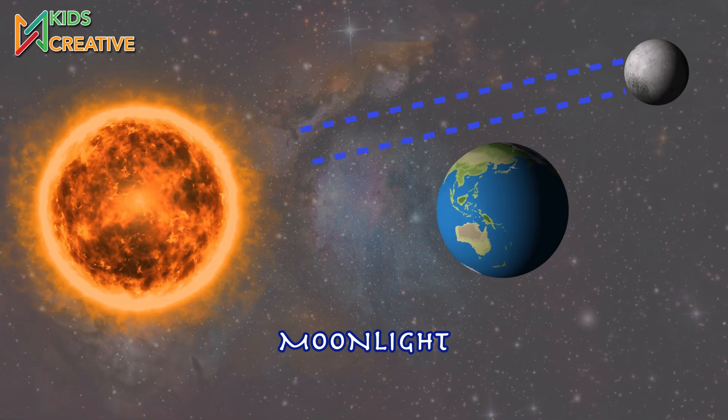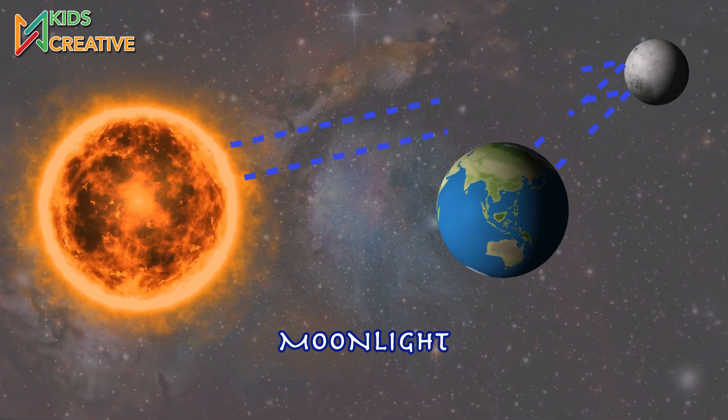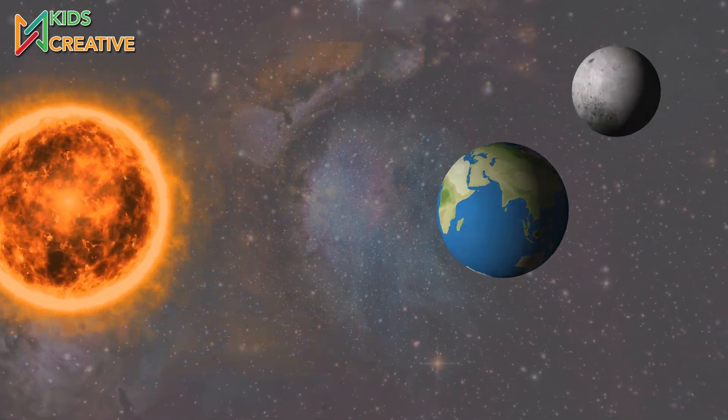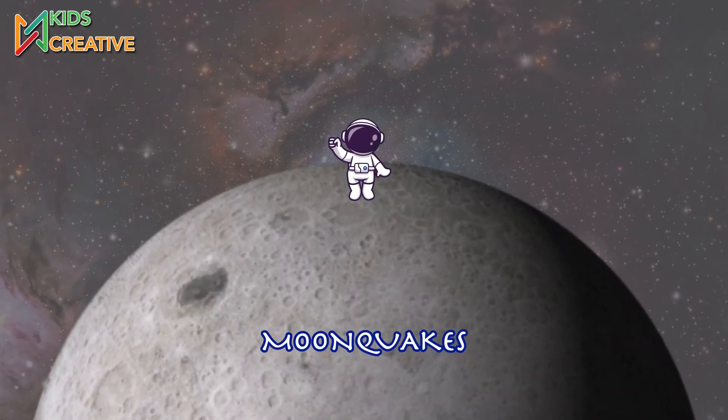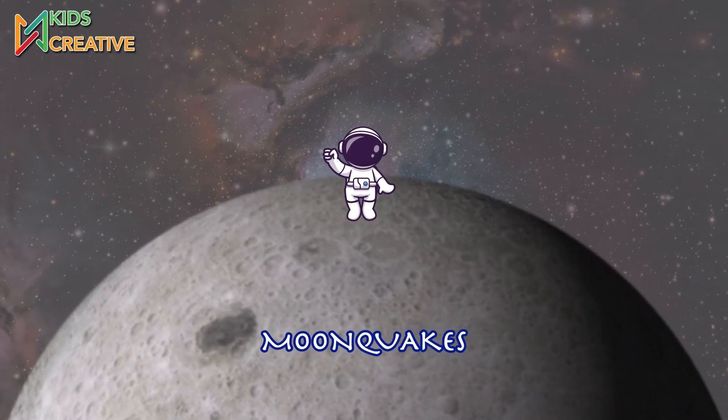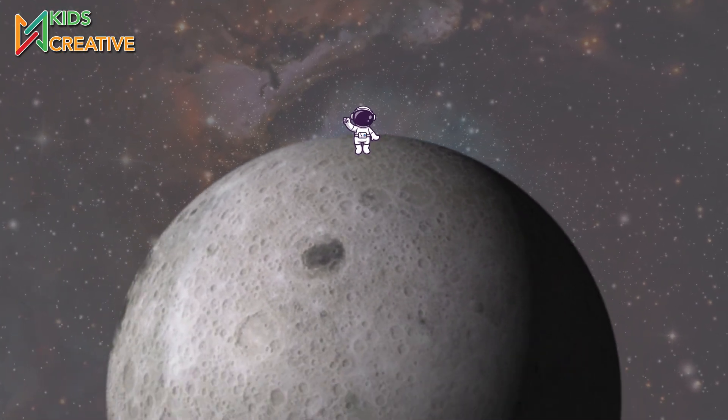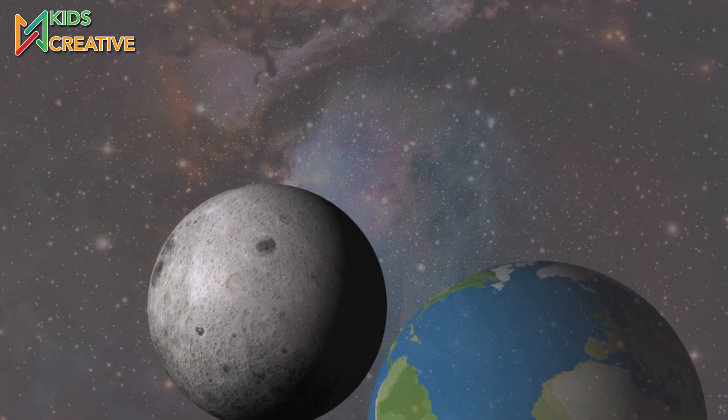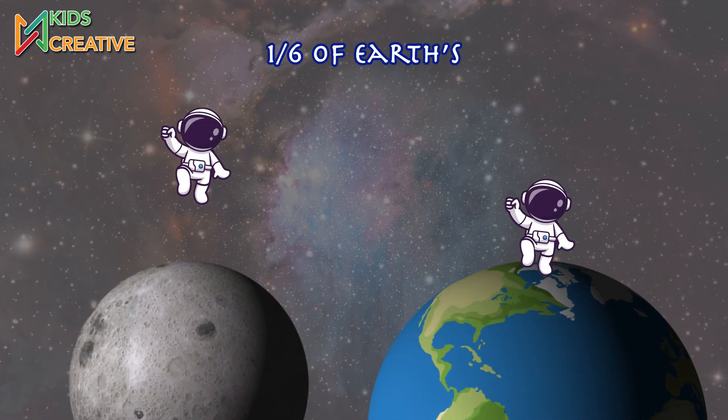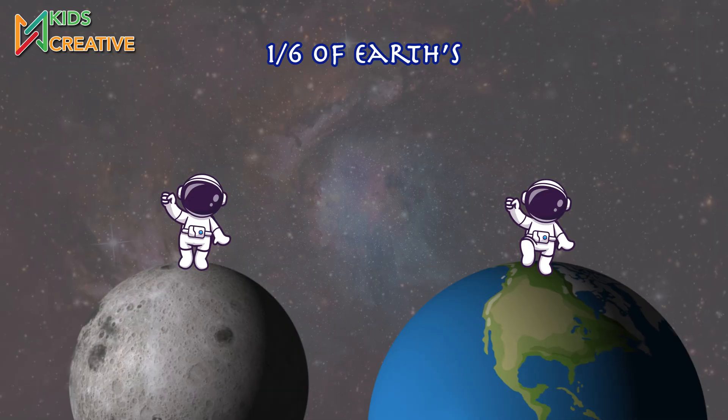The Moon doesn't create its own light. It reflects sunlight like a mirror. It has moonquakes just like earthquakes, but they last much longer. Its gravity is only one-sixth of Earth's, making jumping super easy.